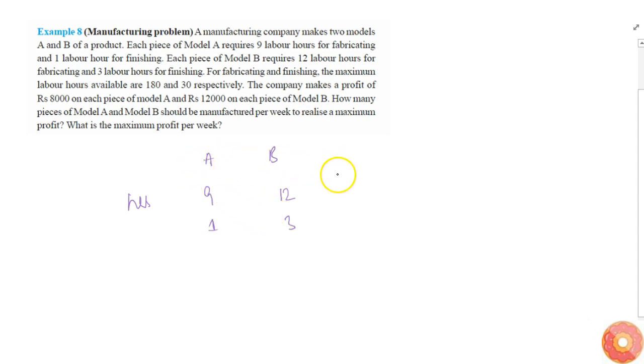The maximum labor hours available are 180 for fabricating and 30 for finishing. The company makes a profit of rupees 8,000 on each piece of Model A and rupees 12,000 on each piece of Model B.